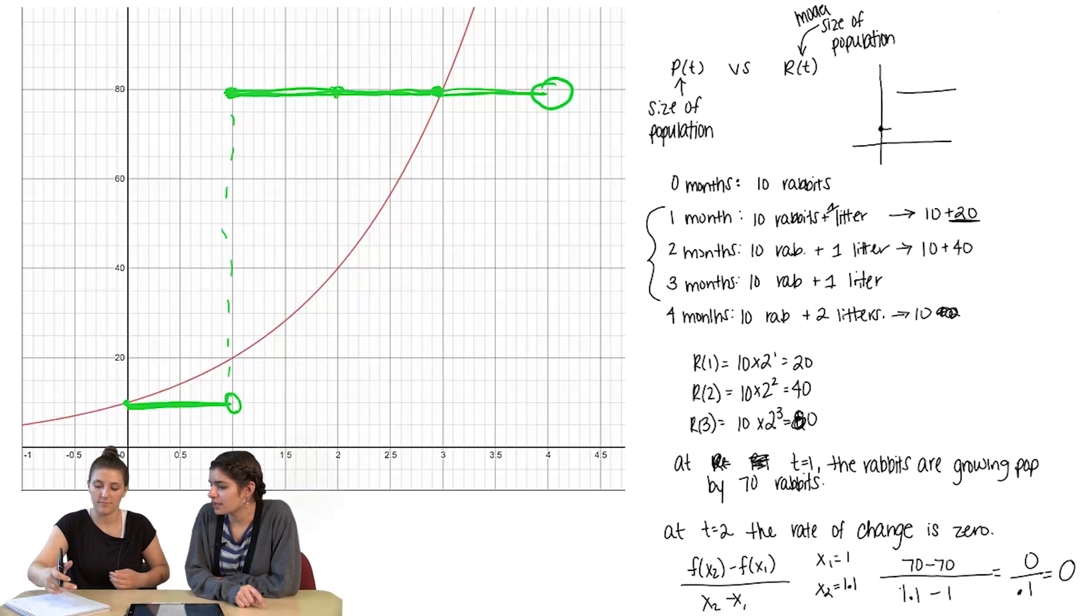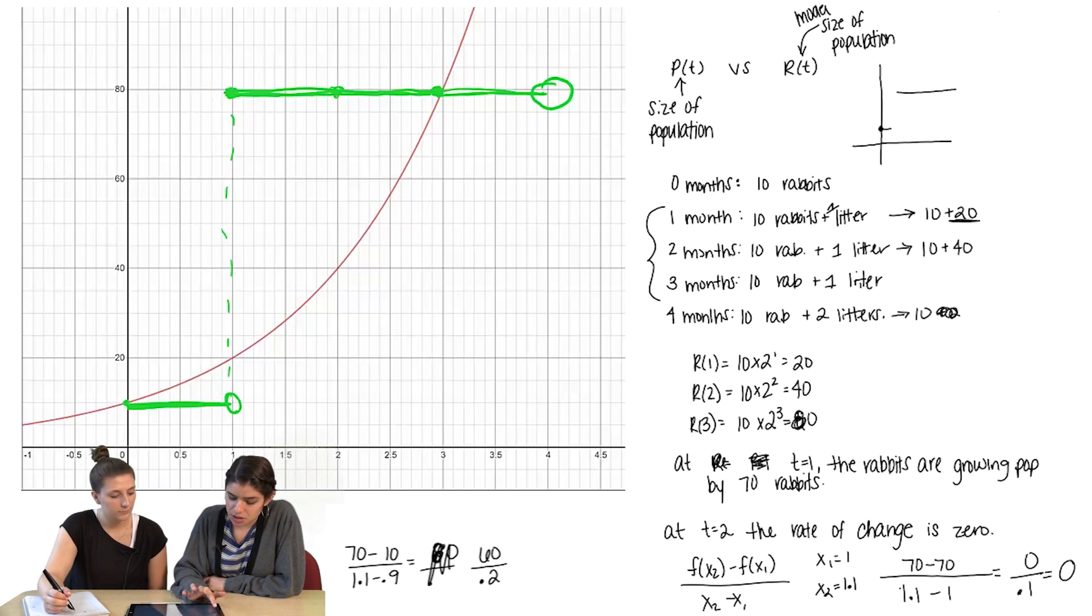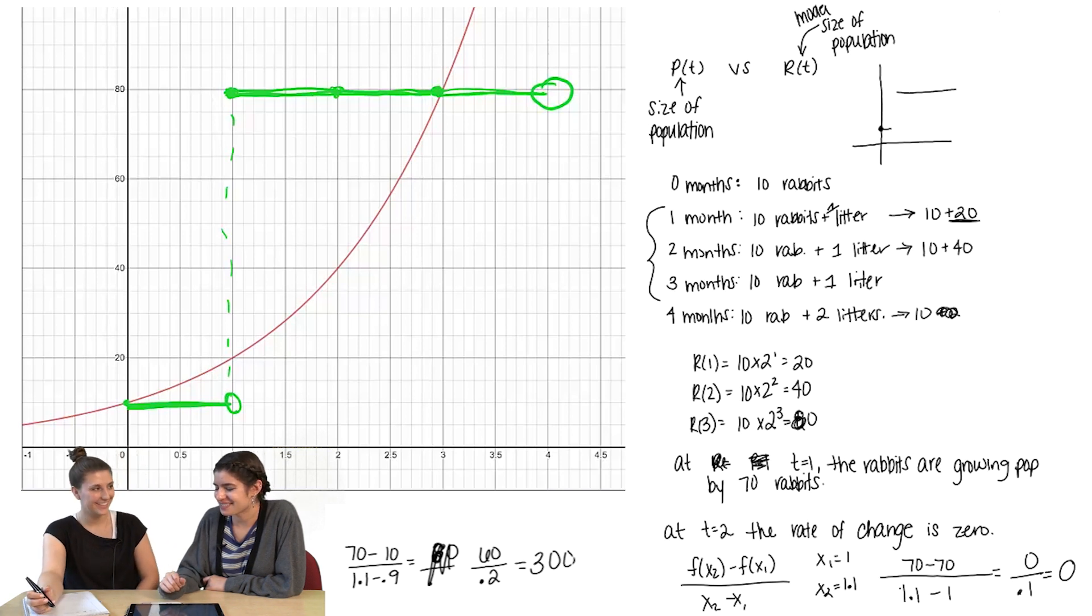Let's go to the left and the right maybe. So let's do 0.9 to 1.1. Let's try to go over the interval right now. So at 1.1 we said it was 70. And at 0.9 it's only 10 because they didn't have the babies yet. So that gives us 60 over 0.2, which is 300.